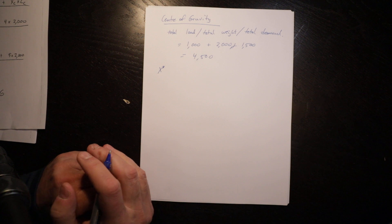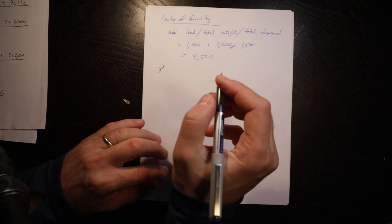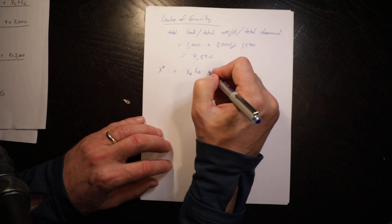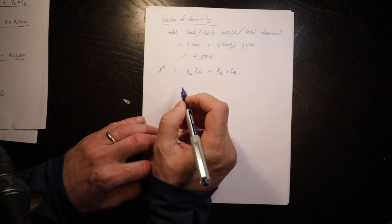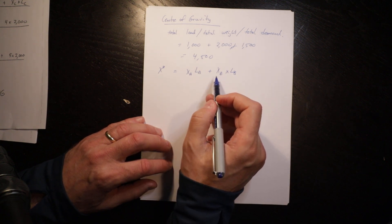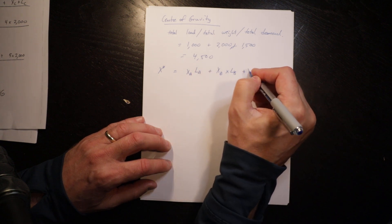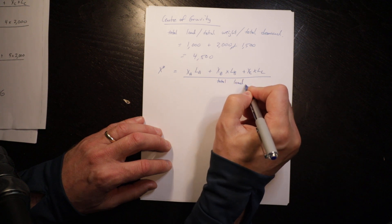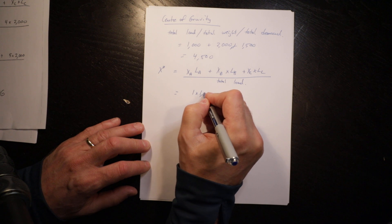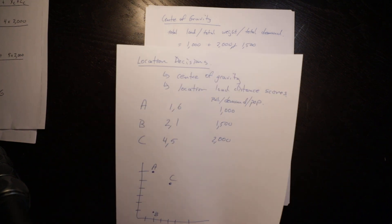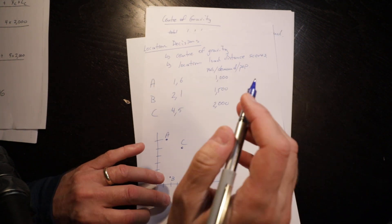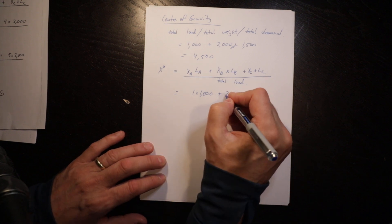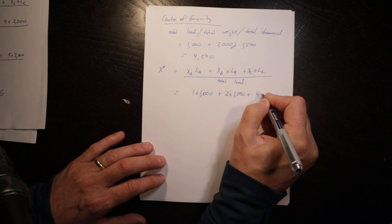To get the center of gravity we do X and Y separately. So X star equals X_A times load_A plus X_B times load_B plus X_C times load_C, divided by total load. That equals 1 times 1,000 plus 2 times 1,500 plus 4 times 2,000, divided by 4,500, which equals 2.67.